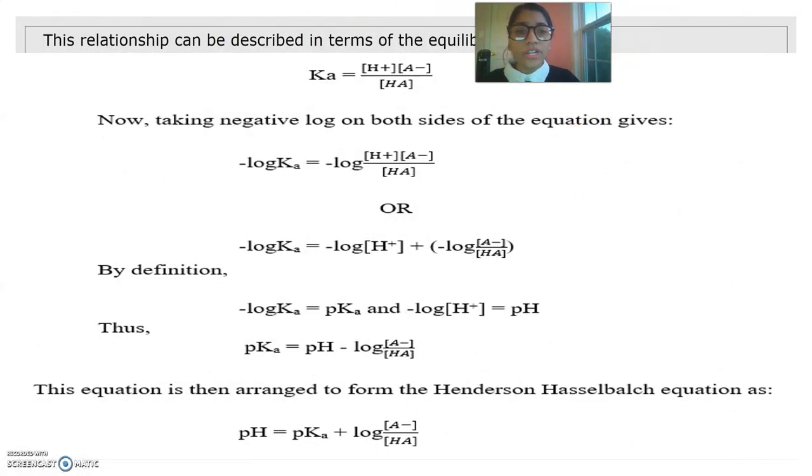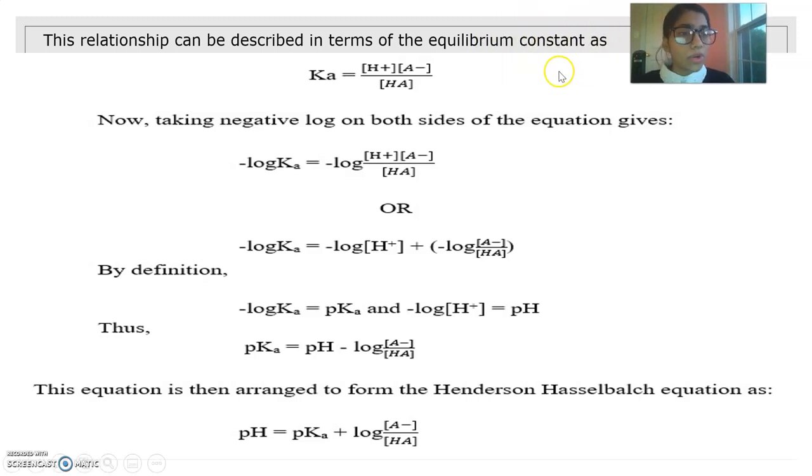This relationship can be described in terms of the equilibrium constant as: Ka = [H+][A-]/[HA]. Now, taking negative log on both sides of the equation gives: -logKa = -log[H+] + (-log[A-]/[HA]). By definition, -logKa = pKa and -log[H+] = pH.